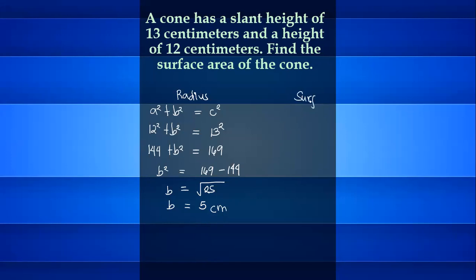Surface area is equal to pi times the radius times the slant height. This is the lateral area of a cone plus pi times the radius squared, which is the base area of a cone.